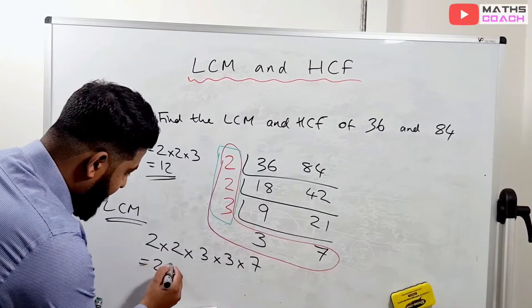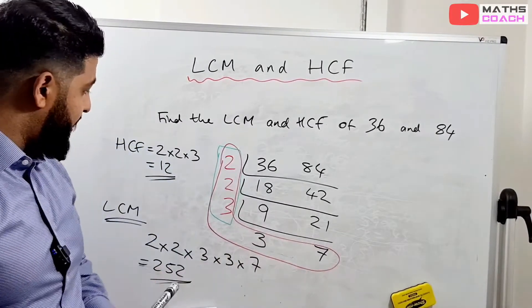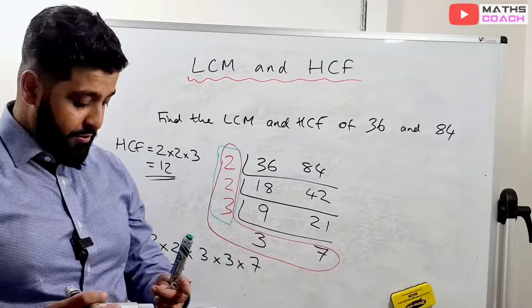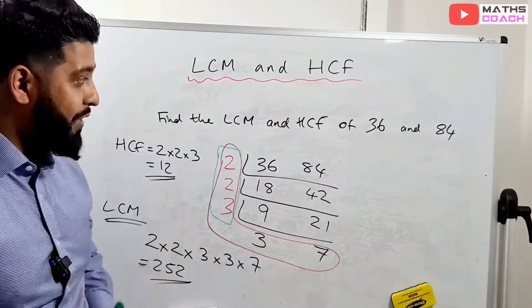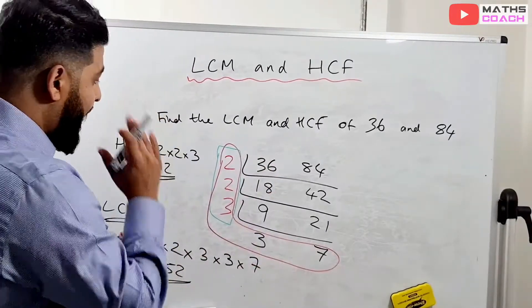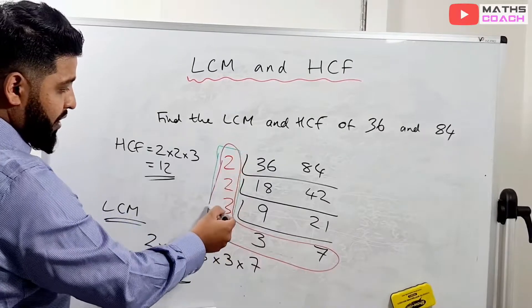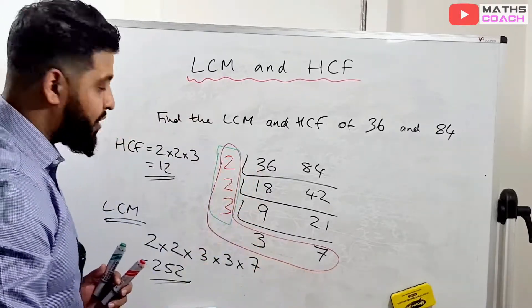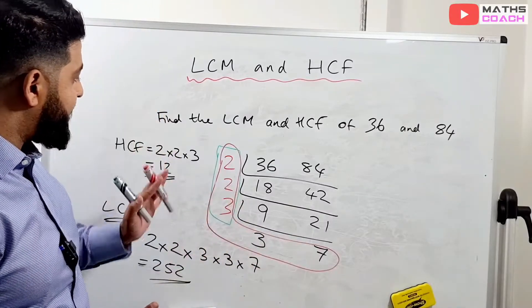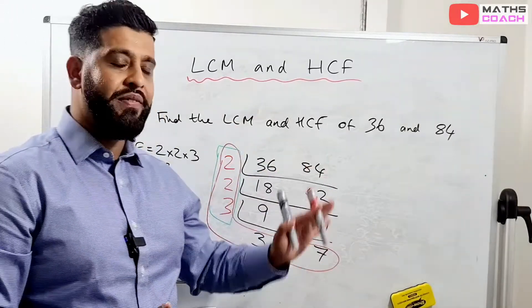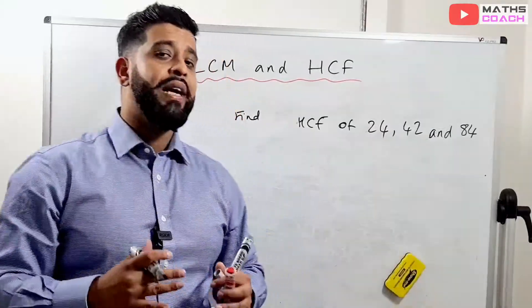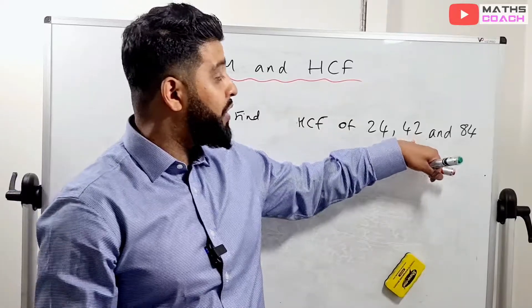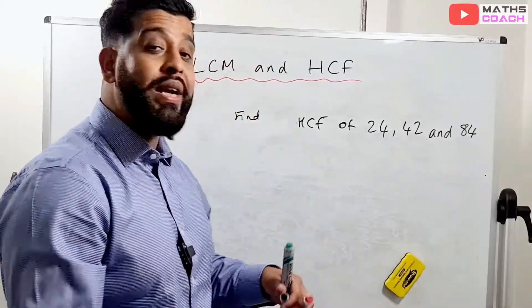If you can't do that in your head, use a calculator. If it's a non-calculator paper, you'll need long multiplication. To recap: HCF is found by multiplying only the numbers on the side, and LCM is found by multiplying all numbers in the L-shape — L for lowest common multiple. Now let's look at a three-number example: find the HCF of 24, 42, and 84.